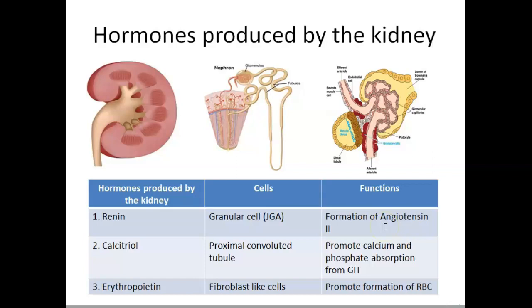Angiotensin 2 is a potent vasoconstrictor and is also involved in the production of aldosterone. The second hormone produced by the kidney is calcitriol, the active form of vitamin D. Calcitriol is produced by the proximal convoluted tubular cells, which is the first part of the nephron. The major action of calcitriol is to promote calcium and phosphate absorption from the GIT.